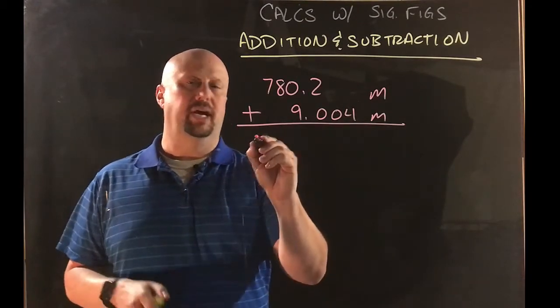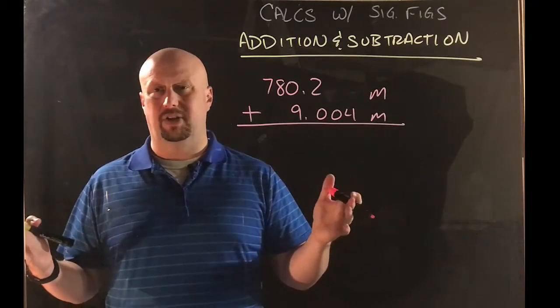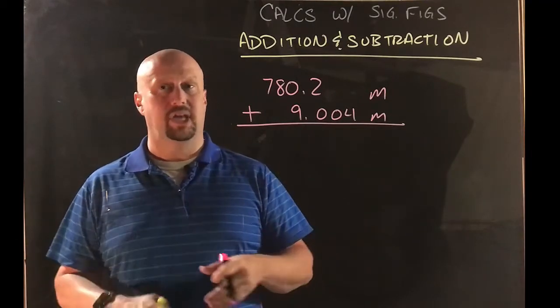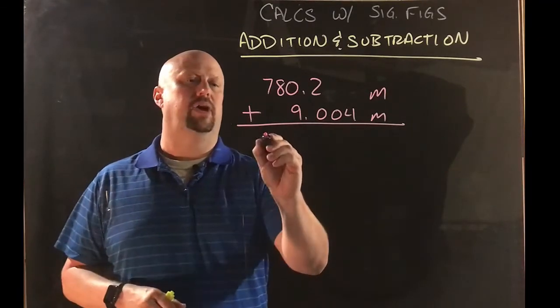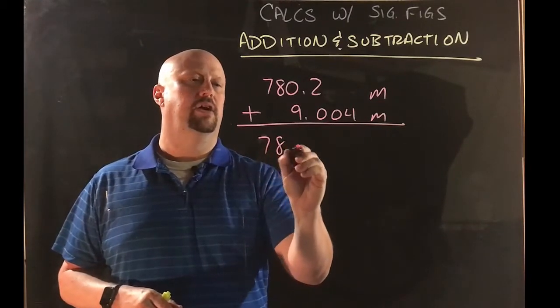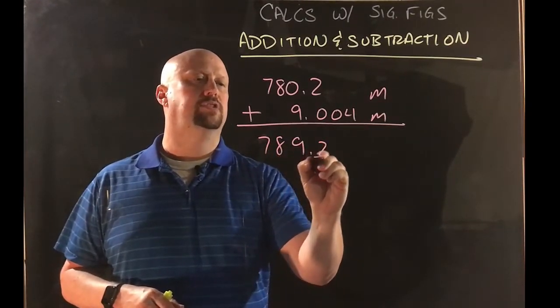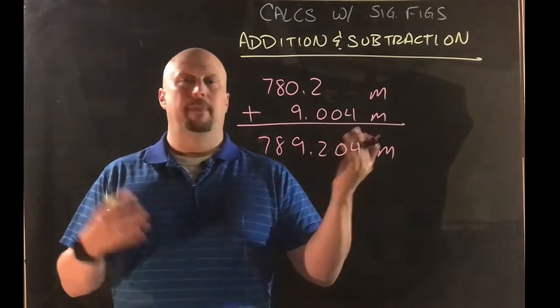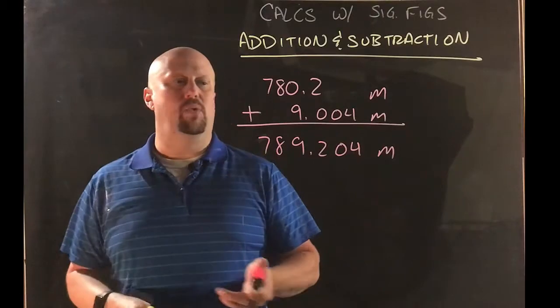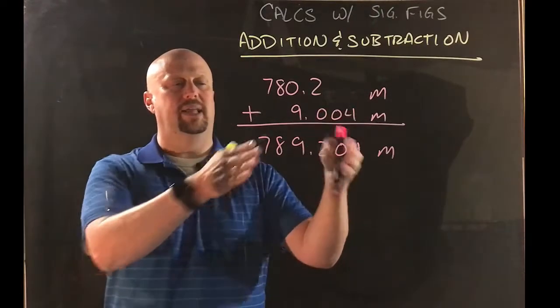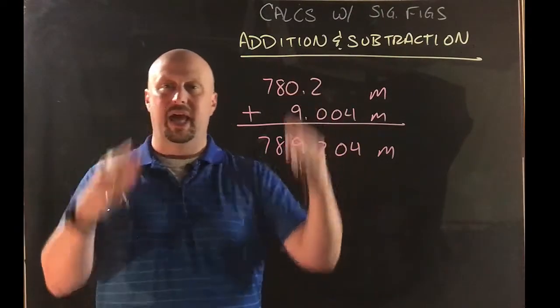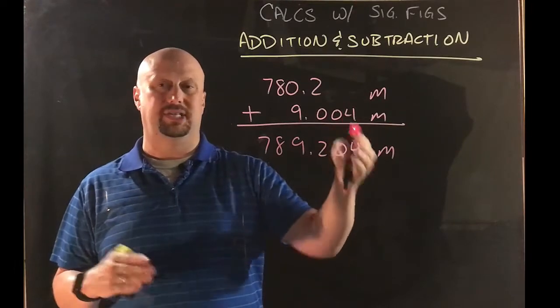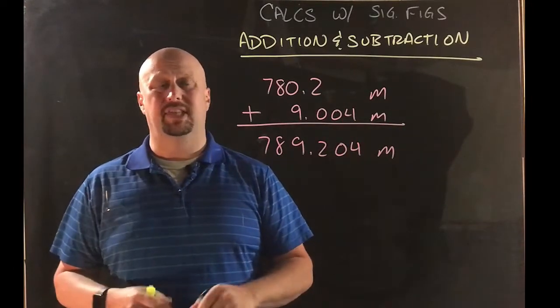Do the math real quick, and by the way, anytime you're doing sig fig calculations, do the calculation first, then worry about the sig figs. So we're going to add everything together here: 789.204 meters. And so the question is, is that okay? Can I let that be? Well, here's the thing, is that if I do the math and I get this, that implies that everything I added together was as precise as that last measurement. That obviously is not the case.